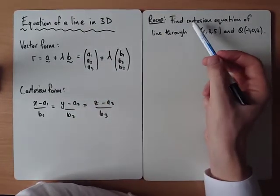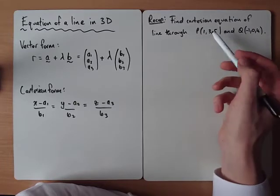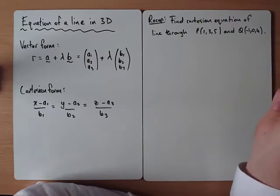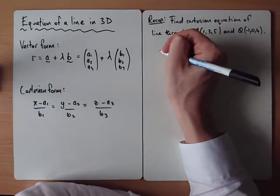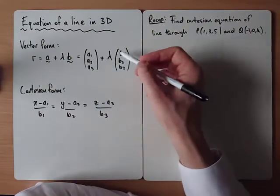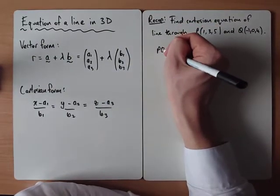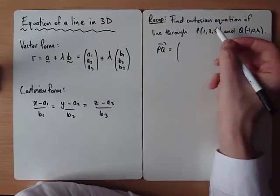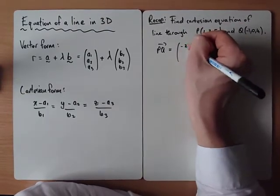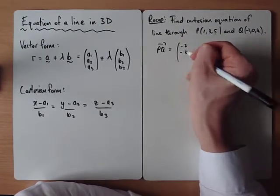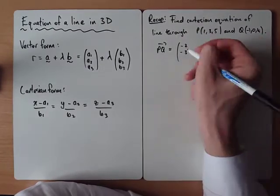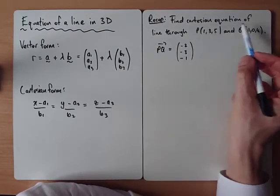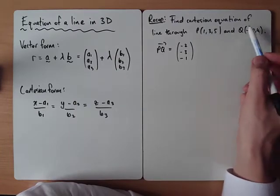Let's try a quick example. It says find the Cartesian equation of the line which goes through the point P(1,3,5) and Q(-1,0,4). So we know a point on the line already, we just need to find the direction of the line. The vector from P to Q would be Q minus P. From P to Q would be -2, -3, -1.